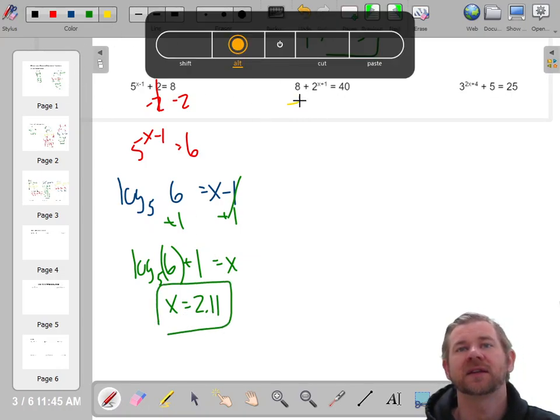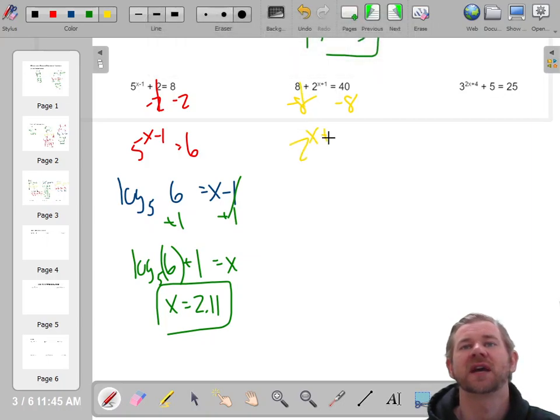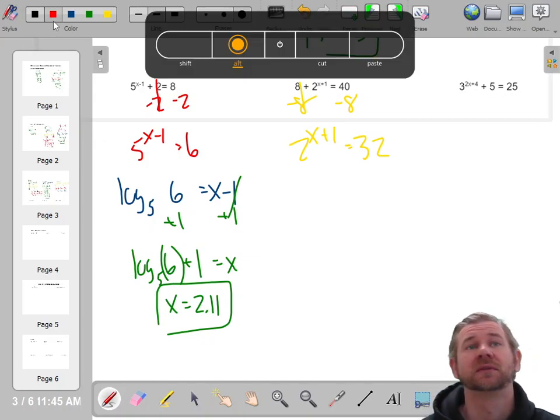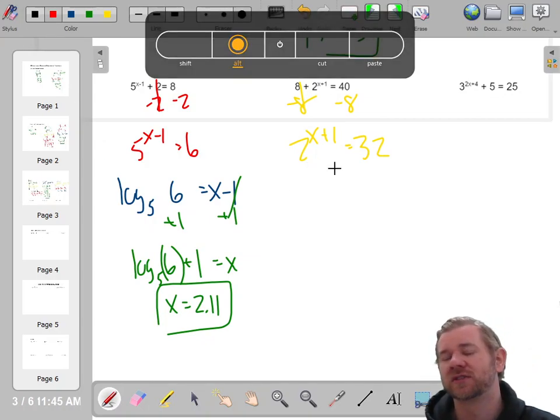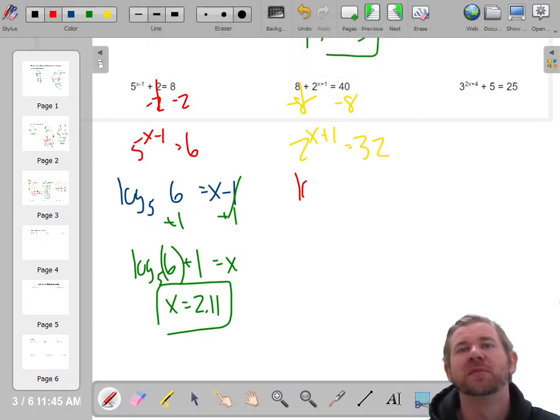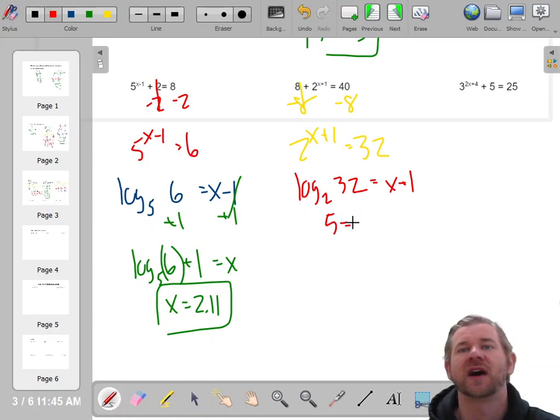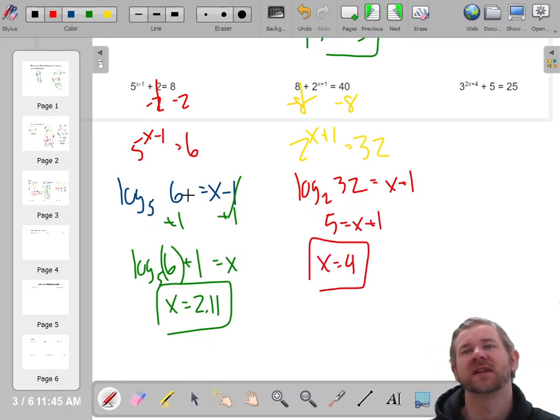Subtract 8 on both sides. 2 to the x plus 1 equals 32. Now, you could rewrite this. These are both powers of 2. But I'm going to work it out using logs just because I want to practice doing that. The base 2 log. So 2 to the x plus 1 equals 32. And you're like, oh, yeah. I know that one. 2, 4, 8, 16. That's 5. So 5 equals x plus 1. x equals 4. That's a nice one.